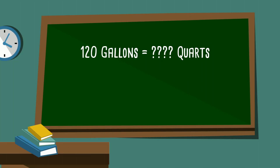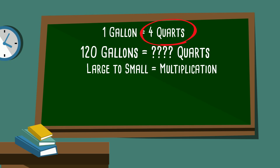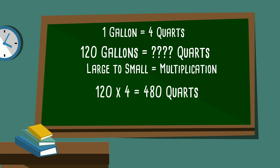120 gallons equals how many quarts? The hint: one gallon equals four quarts. Let's determine which is larger — gallons or quarts. Since one gallon equals four quarts, gallons is larger than quarts, so we're going from large to small. We multiply 120 times four, and that gives us 480 quarts.